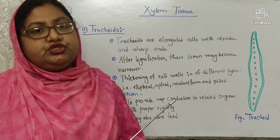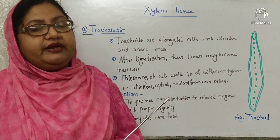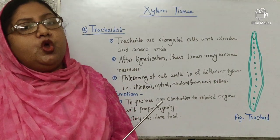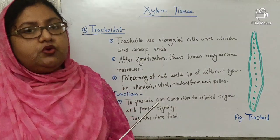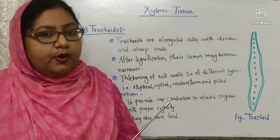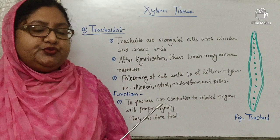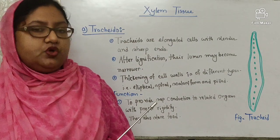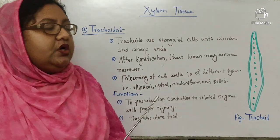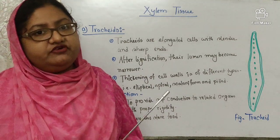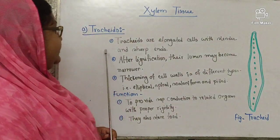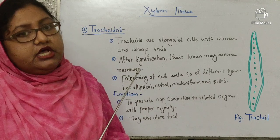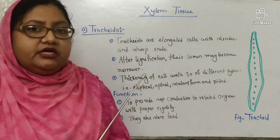Now, complex tissue. The tissue which comprises different types of cells is called complex tissue. Complex tissue is of two types: xylem and phloem. Xylem is the complex tissue which helps to transport water and minerals from roots to different parts of a plant. Xylem is comprised of four types of cells: tracheid, vessels, xylem parenchyma, and xylem fiber.